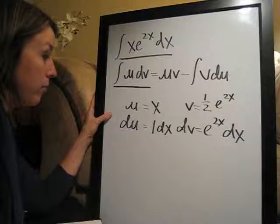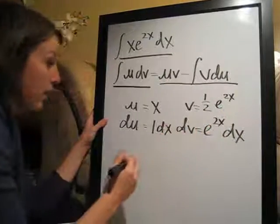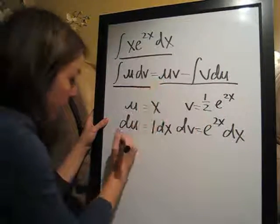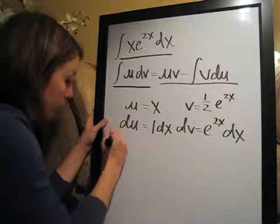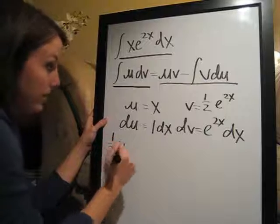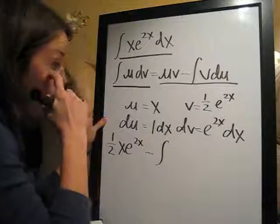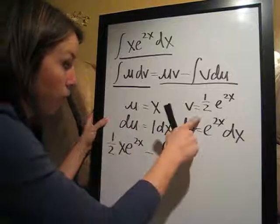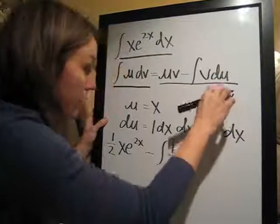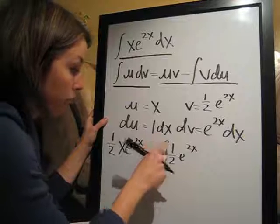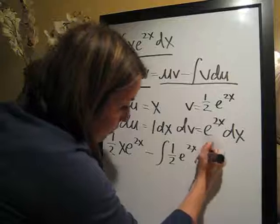So what we're going to want to do now is plug back in. We're going to plug in for u, x, and then v is 1 half e to the 2x. So I'm going to go ahead and stick the 1 half in front to make this cleaner. e to the 2x, minus the integral of v, 1 half e to the 2x, du. So just 1 dx. The 1 disappears, and then we just write dx.